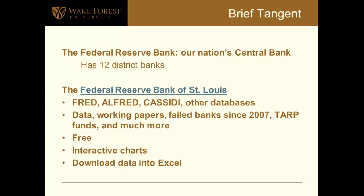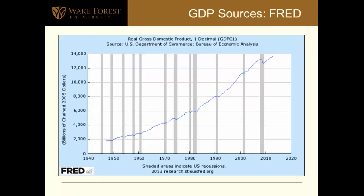The FRED charts are interactive — you can save the chart or download the data into Excel. Here's a chart from FRED showing gross domestic product for the United States from about 1947 through this year. Note the vertical gray bars, which represent periods of recession — defined as two or more consecutive quarters of declining GDP. The chart is interactive, so we could zoom in to look at just the last year or three years, whatever period is relevant.